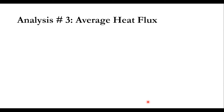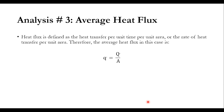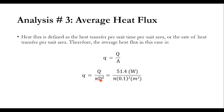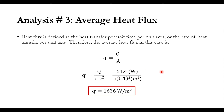For the last part, the average heat flux, we add the impact of area. Small q-dot equals capital Q-dot divided by area, where area is calculated as pi·D². With D equal to 0.1 meter and pi equal to 3.1415, using Q-dot from the previous calculation, the heat flux is 1636 watt per square meter.